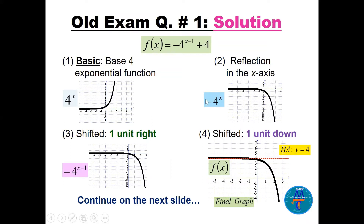Next, the minus outside means we reflect the graph in the x-axis. Then we have x minus one, so we shift one unit to the right, moving from step two to step three. Finally, we shift up four units, so the horizontal asymptote becomes y = 4.